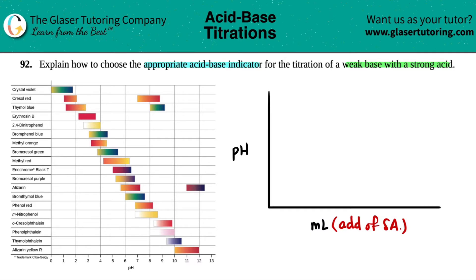Let's label the pH axis going up by twos: pH of zero, two, four, six, eight, ten, and twelve.